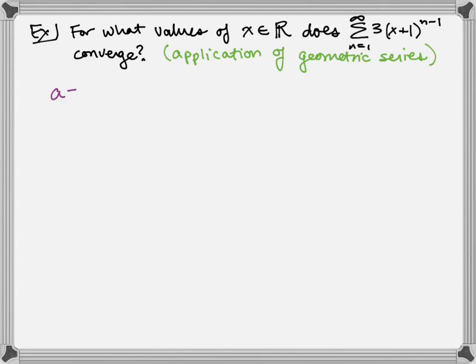Our a value is 3, our r value is x+1. Now luckily, we know a lot about geometric series. We know that they converge as long as this radius is less than 1 in absolute value, and if the radius in absolute value is greater than or equal to 1, this thing diverges.